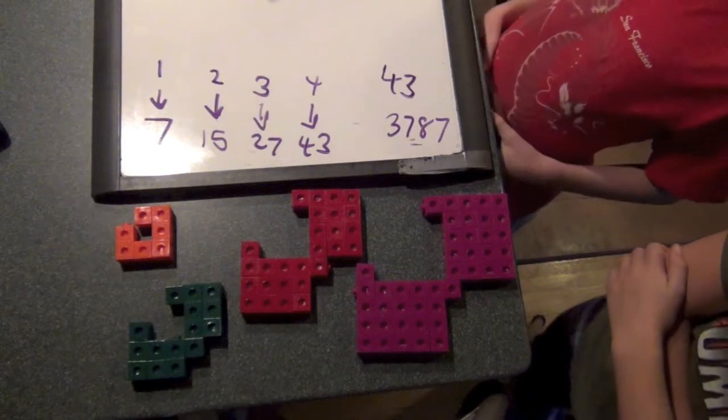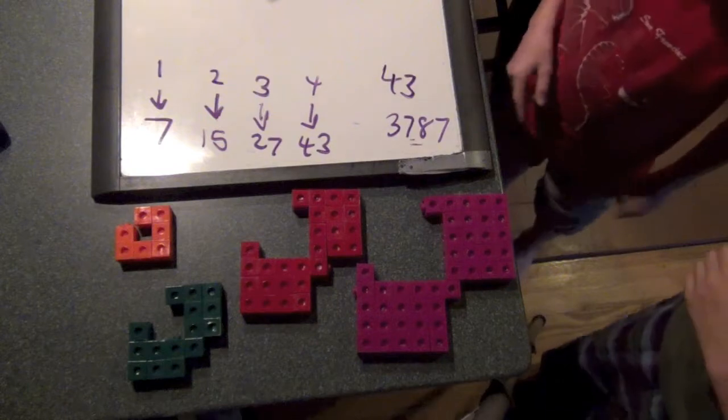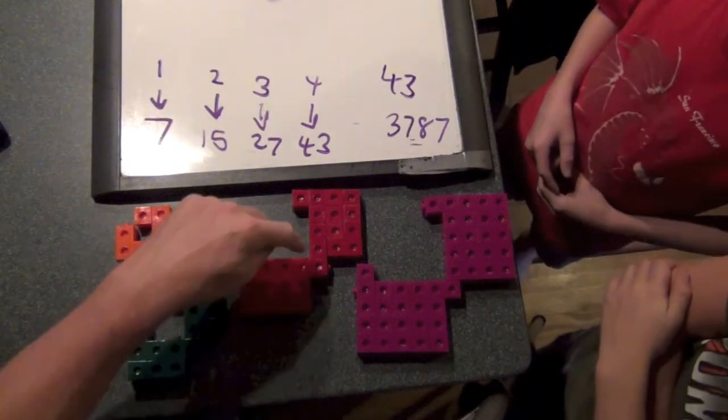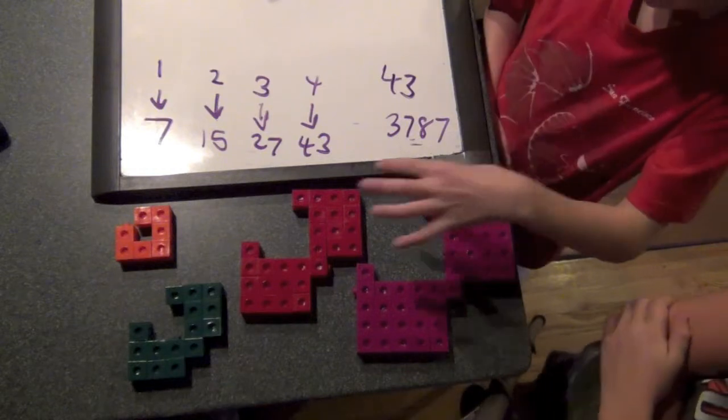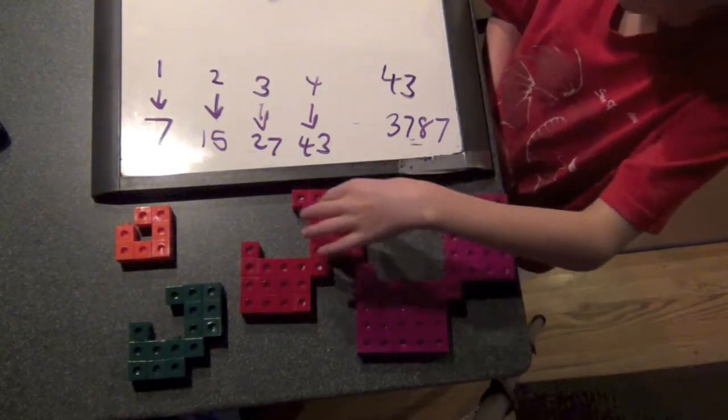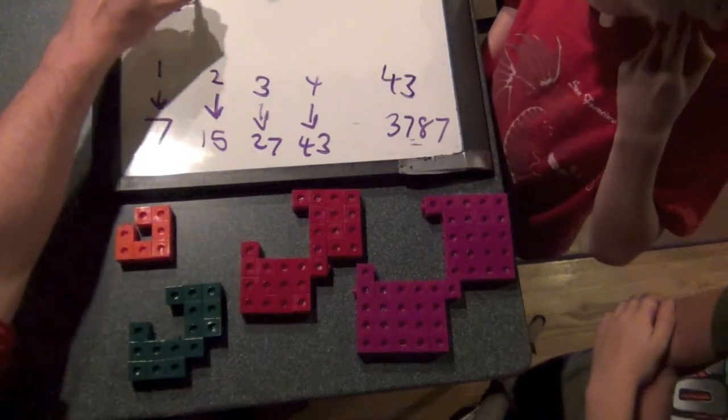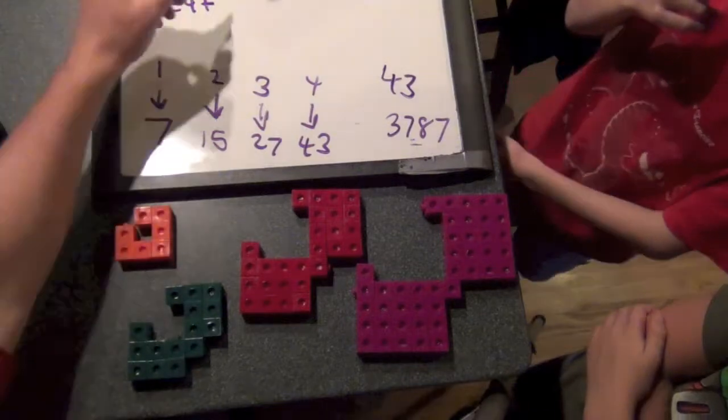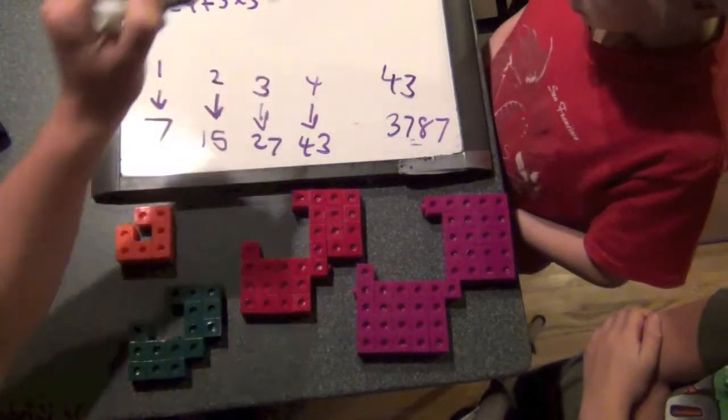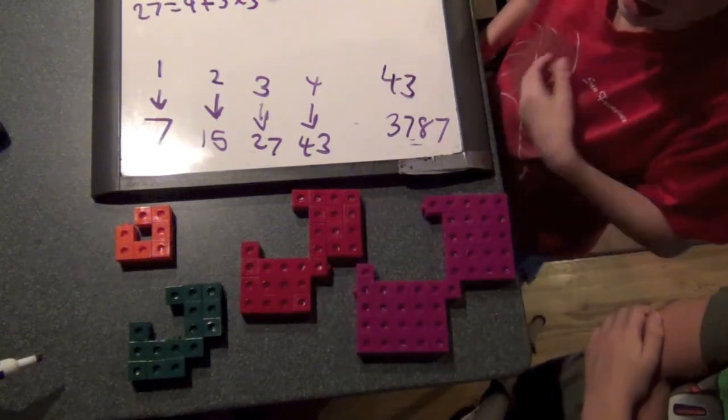So we're going to see if we can find the pattern. So did you have any ideas for how you counted them? How did you count up to twenty-seven on this one? Well, I counted this, which is four. So you're going to say twenty-seven equals four plus... Four plus three times three, which is nine.